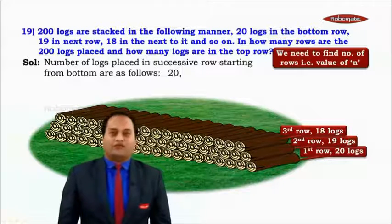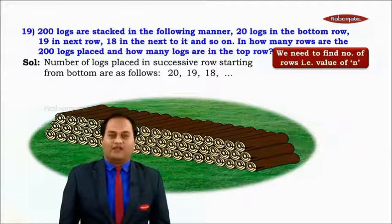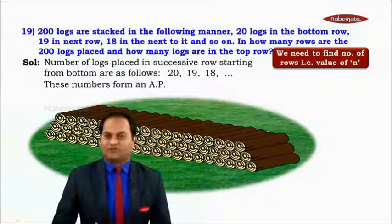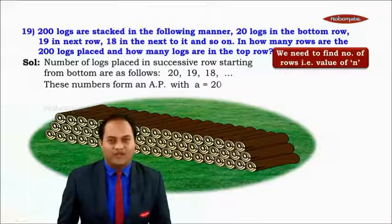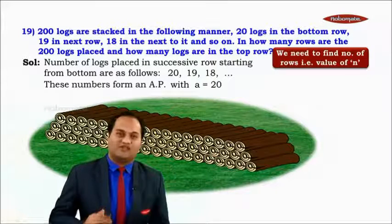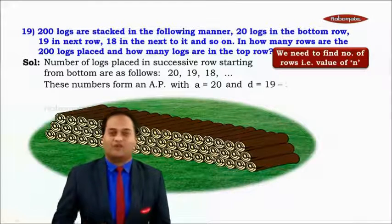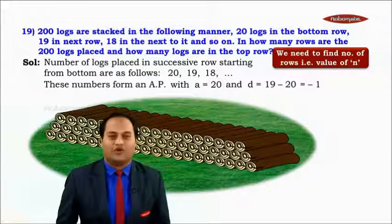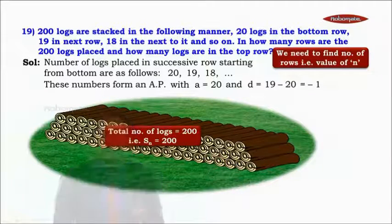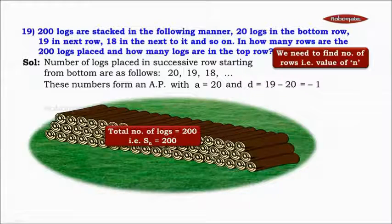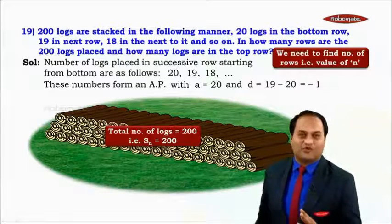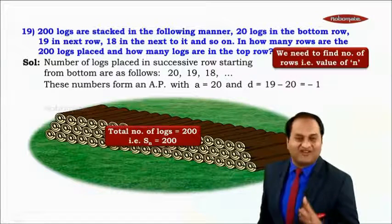The AP formed is 20, 19, 18, and so on. As discussed, these numbers form an AP with a = 20 and d = 19 − 20 = −1. The total number of logs is 200, so Sn = 200.